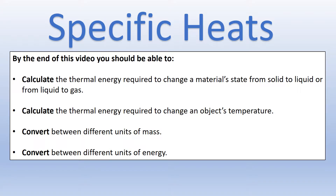In this video, we're going to follow on from the last video and look at doing some calculations with specific heat capacity, the specific latent heat of fusion, and specific latent heat of vaporization. We're going to look at a few different scenarios: state changes, temperature changes, and we'll throw in some conversions between different units of mass and different types of energy, which would very much be the type of things that could happen in exam questions.